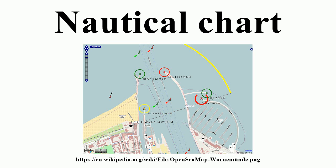Radio broadcasts provide advance notice of urgent corrections. A good way to keep track of corrections is with the chart and publication correction record card system. Using this system, the navigator does not immediately update every chart in the portfolio when a new notice to mariners arrives, instead creating a card for every chart and noting the correction on this card. When the time comes to use the chart, he pulls the chart and chart card and makes the indicated corrections on the chart. This system ensures that every chart is properly corrected prior to use.